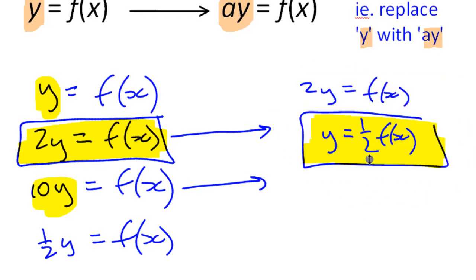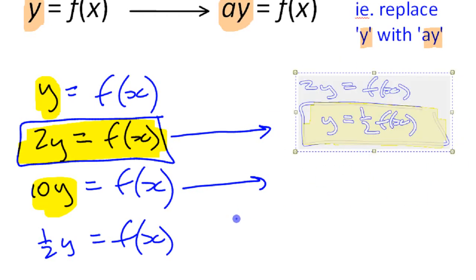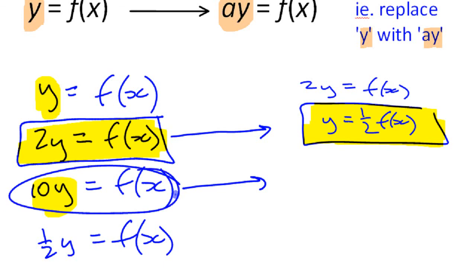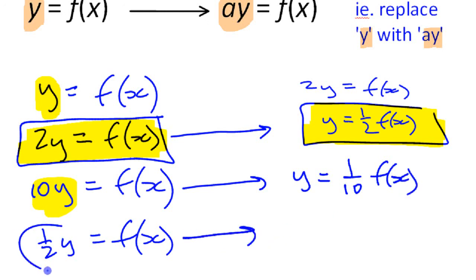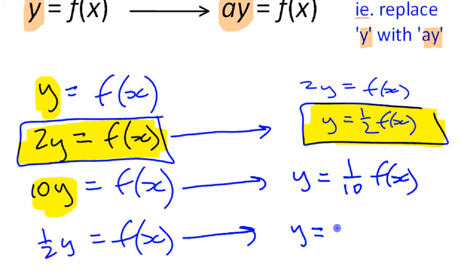For completeness: 10y = f(x) is the same as y = (1/10) f(x). And going the other way, if it's a number smaller than one — ½y = f(x) — that's the same as y = 2 f(x). That's the first thing to notice.